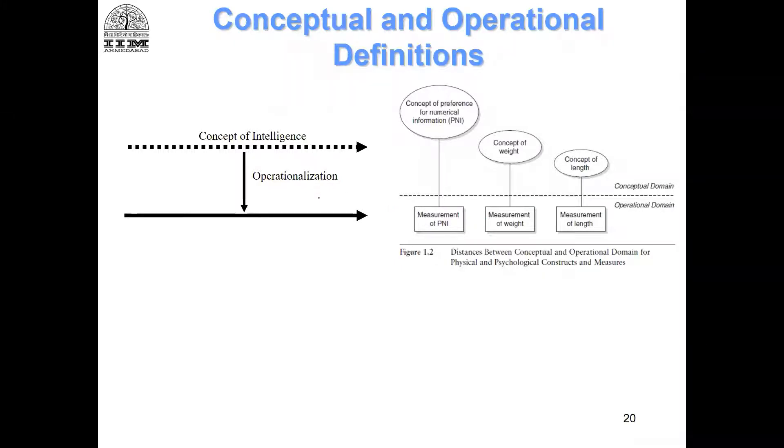Now, the difference between the concept or the construct and the measurement, this is the latent and this is the measured, you see the distances are small then high and then stay high. What does it mean? It means that this is more tangible. Length is pretty tangible. And therefore, the distance, this distance, this error between its measure and the concept is small.